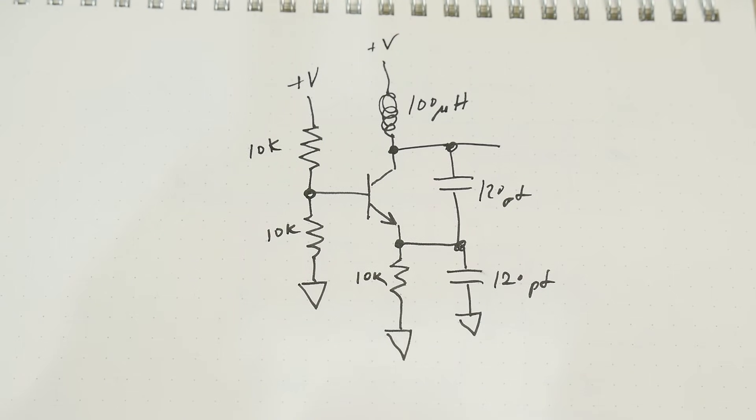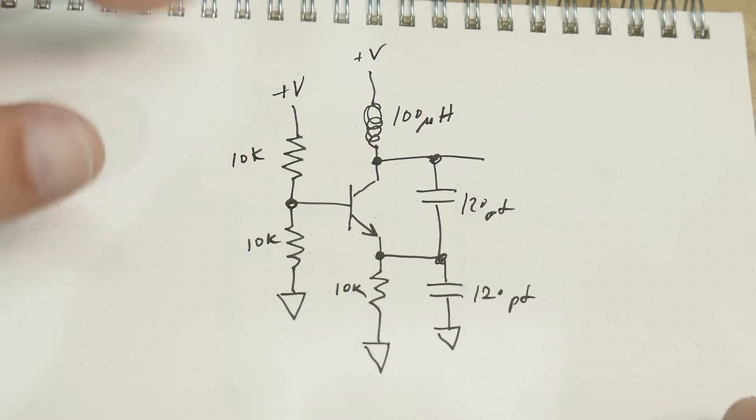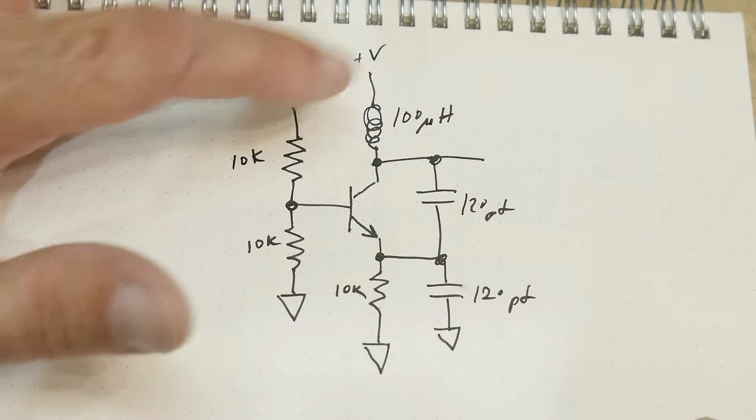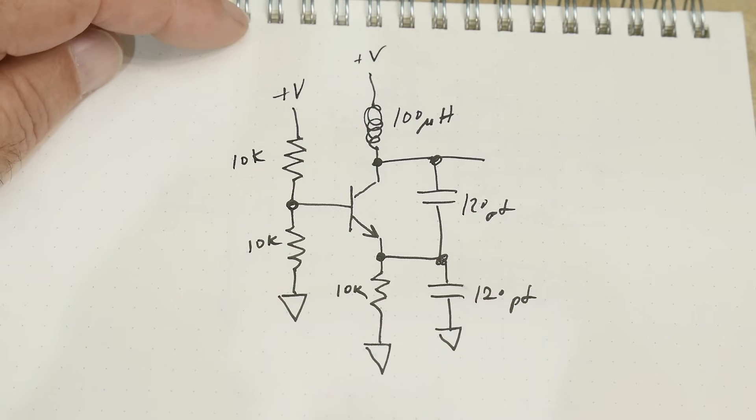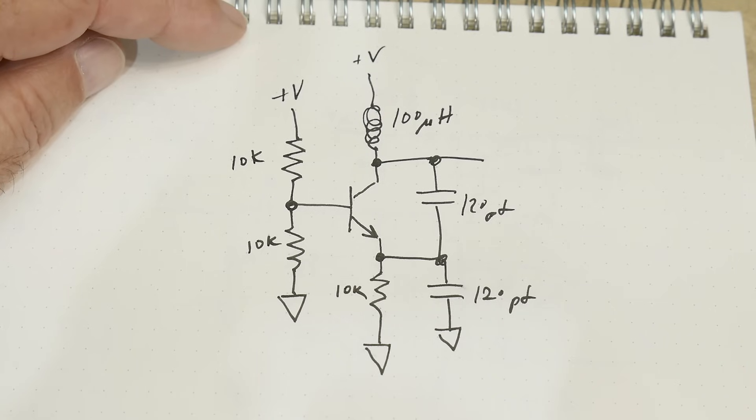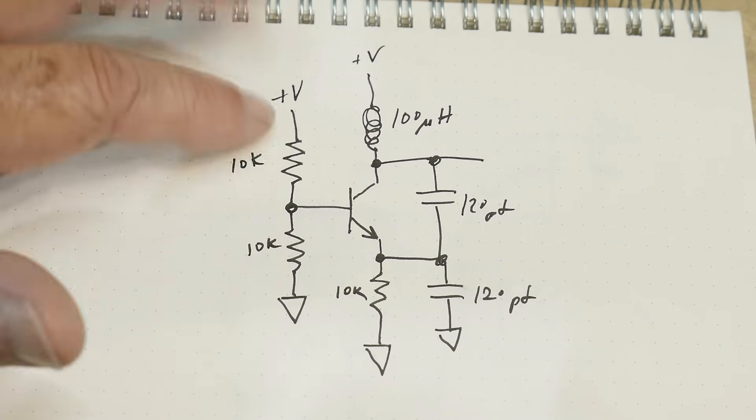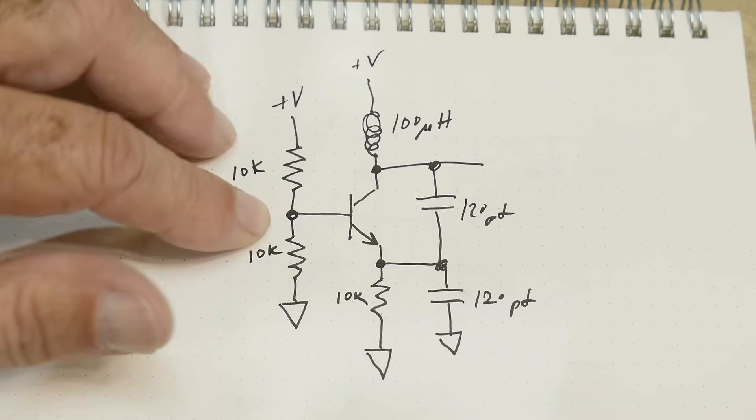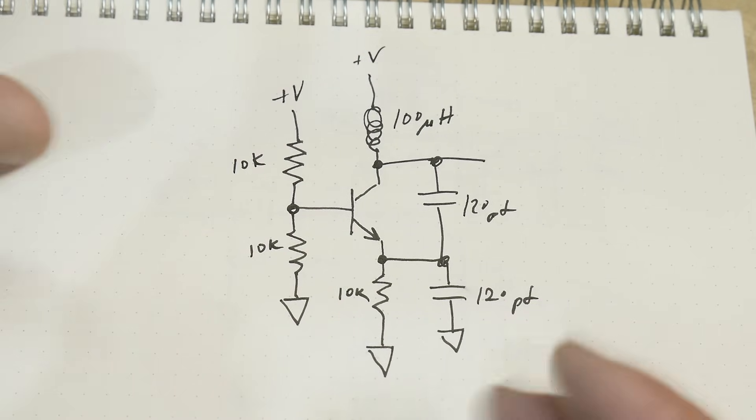What's on the bench today? This is an oscillator circuit I've been investigating. Single transistor oscillators - this one uses an inductor and capacitors to do the oscillation. It's an NPN bipolar transistor, just DC biased on.